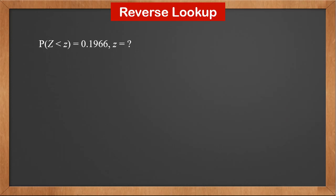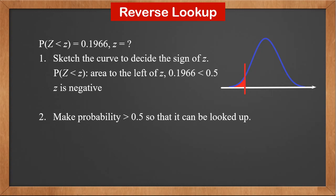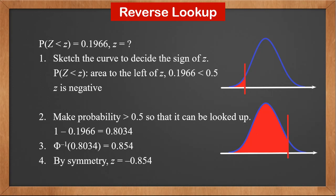P(Z < z) = 0.1966. What is z? First, sketch the curve to decide the sign of z. It's P(Z < z), so it's the area to the left of z. 0.1966 is less than 0.5, so the sketch is like this. Therefore, z is negative. Second, make the probability greater than 0.5 so that it can be looked up in the z table: 1 minus 0.1966 is 0.8034. Third, look it up in the z table. Inverse phi(0.8034) = 0.854. By symmetry, z is minus 0.854.